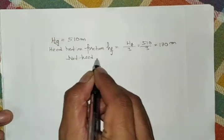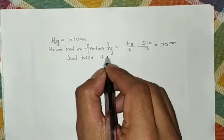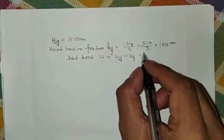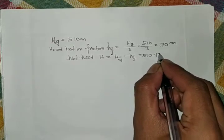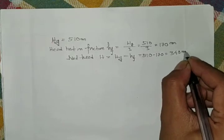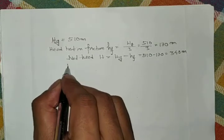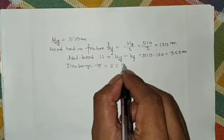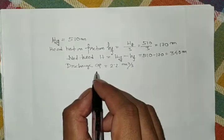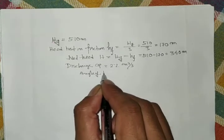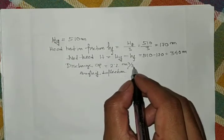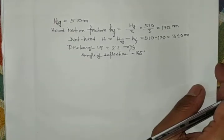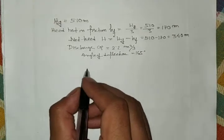From this, we can find the net head: H = gross head minus friction loss = 510 − 170 = 340 m. The discharge Q is 2.5 m³/s and the angle of deflection is 165°.